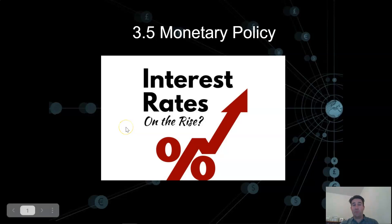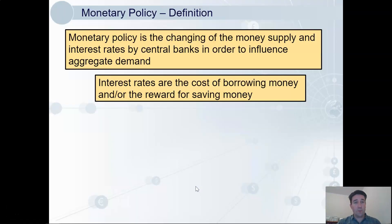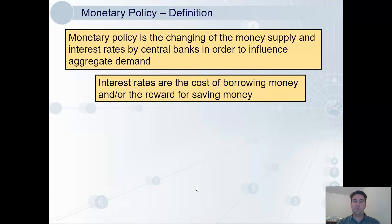Hi everyone, welcome to 3.5, Monetary Policy. This is our first in-depth look at a macroeconomic policy. First, we'll go with definitions. Monetary policy is the changing of the money supply and interest rates by central banks in order to influence aggregate demand, and therefore the macroeconomic objectives.